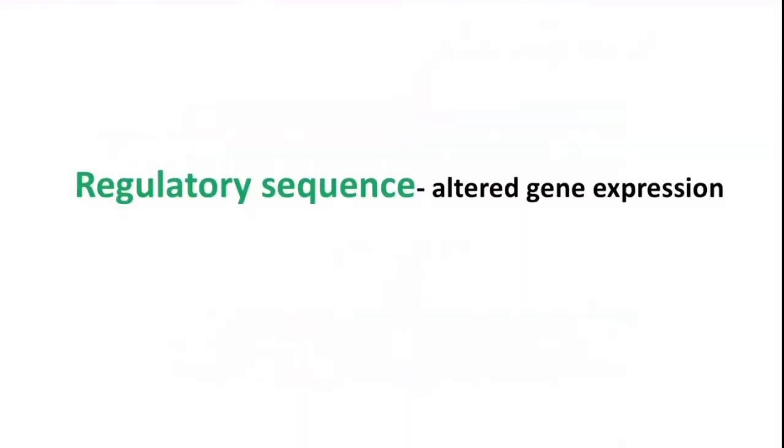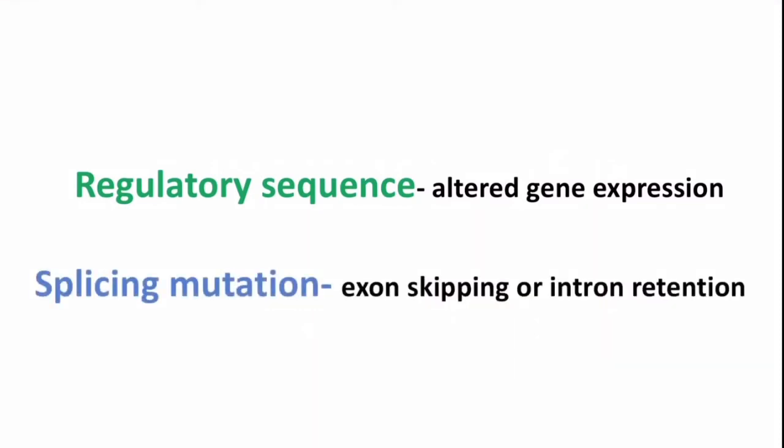Gene mutation can also occur in regulatory sequence. Like in the promoter region, or in the enhancer, silencer. This may cause altered gene expression. Gene mutation can also occur in splicing.